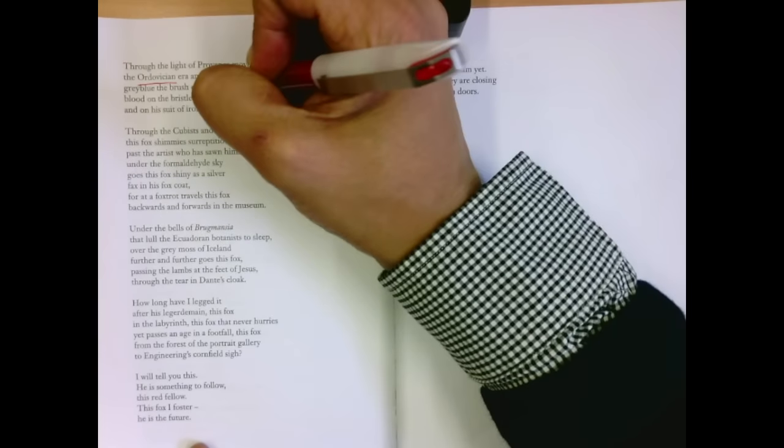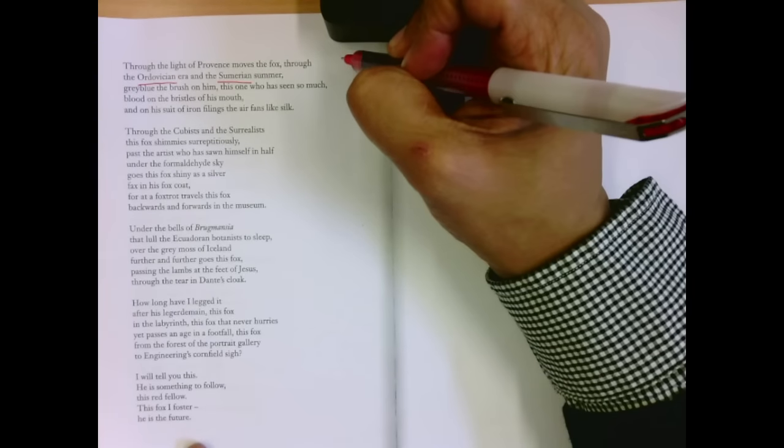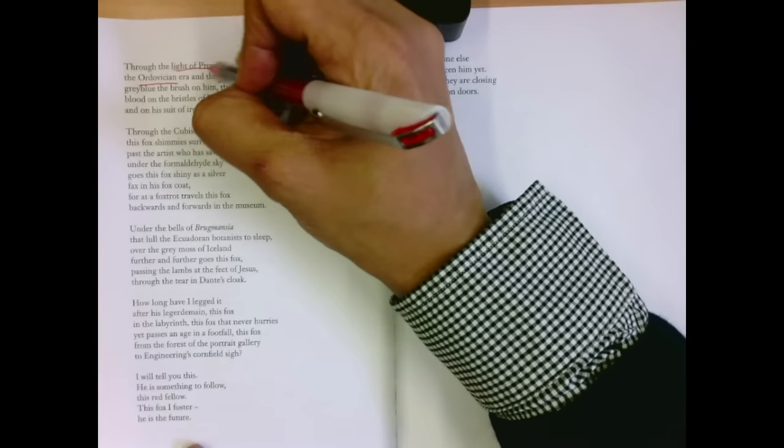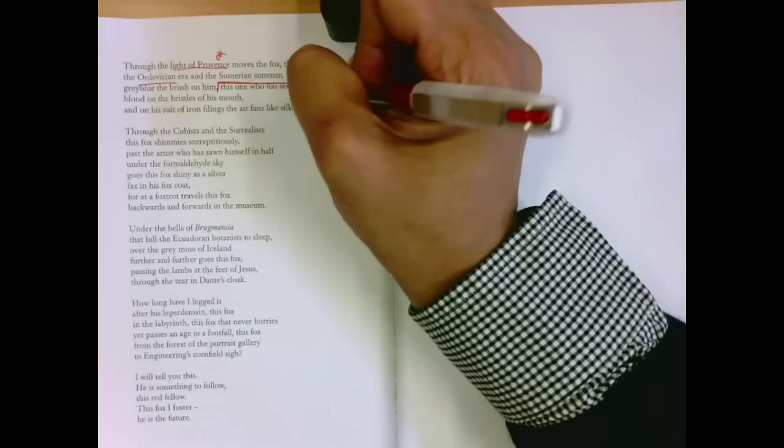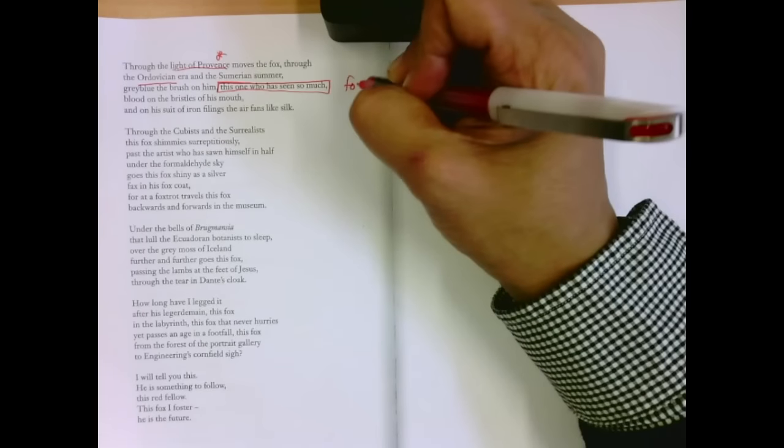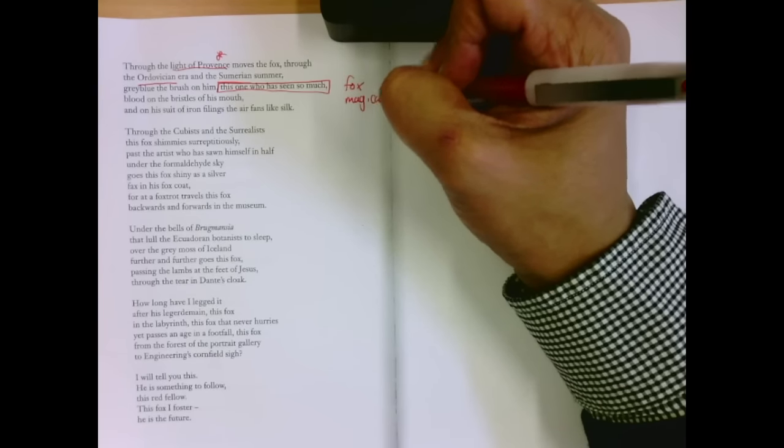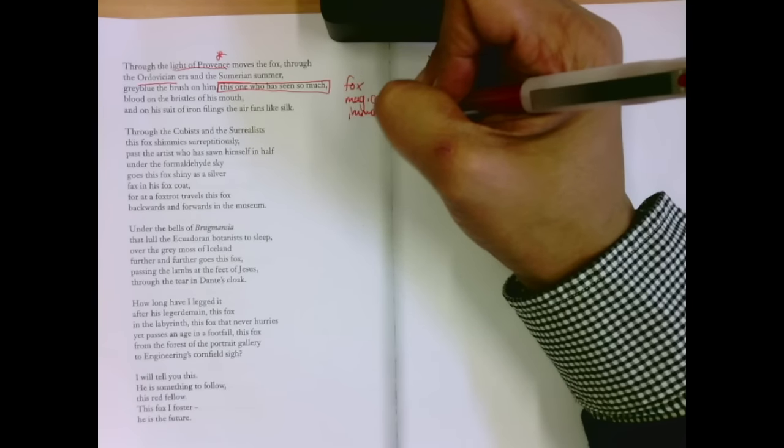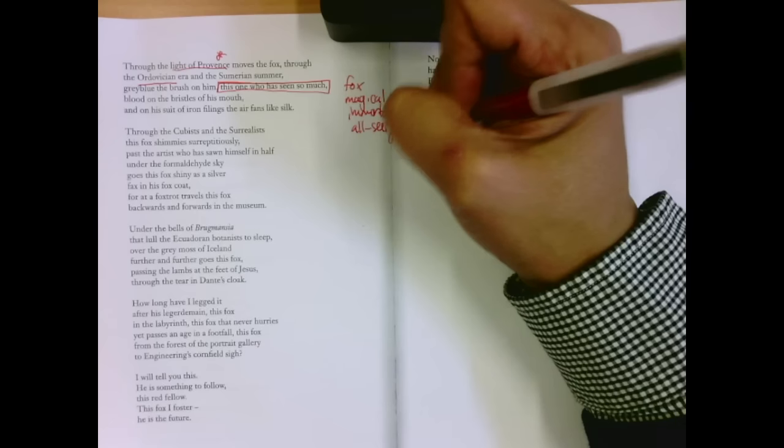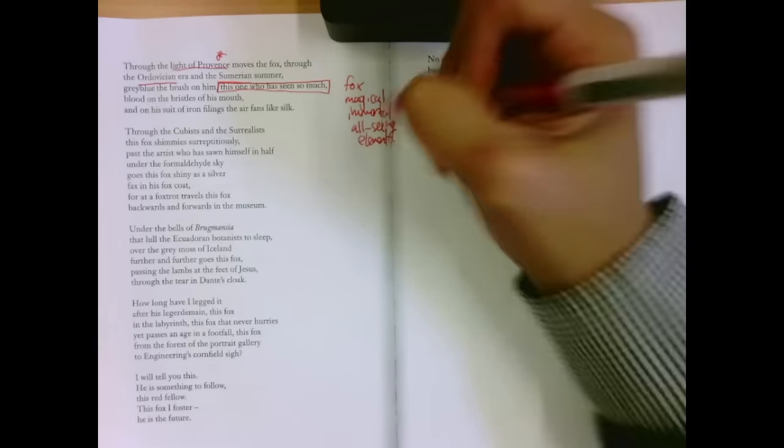Through the light of Provence moves the fox, through the Ordovician era and the Sumerian summer. We get this technical language. It reminds me of Wallace Stevens. We have the light of Provence, which is in southern France, which is classic. The gray-blue, the brush on him. This one who has seen so much. This fox is almost a magical, immortal, all-seeing element that witnesses the art.